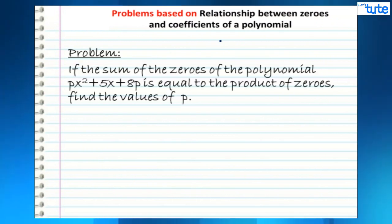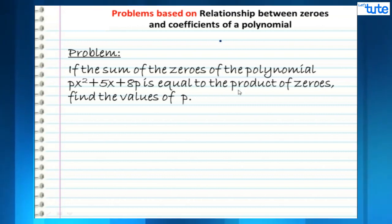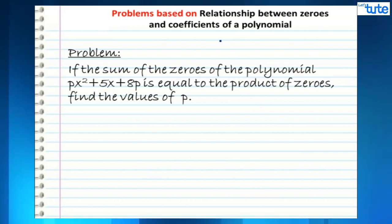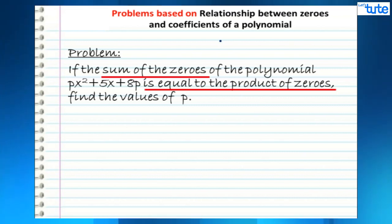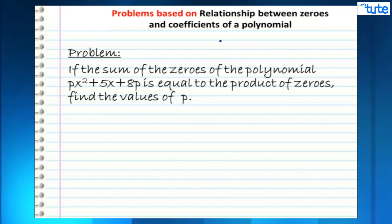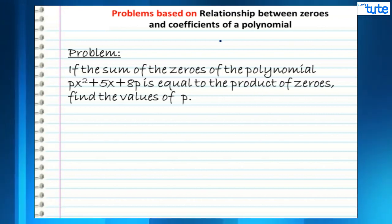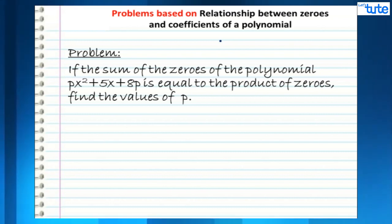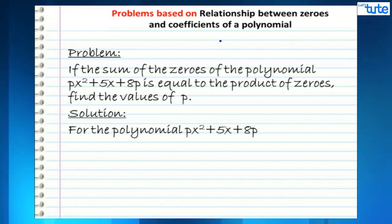The problem we have is: if the sum of the zeros of the polynomial px² + 5x + 8p is equal to the product of zeros, find the values of p. We have been given a polynomial and told that the sum of the zeros and the product of the zeros are equal. We have to find the values of p.